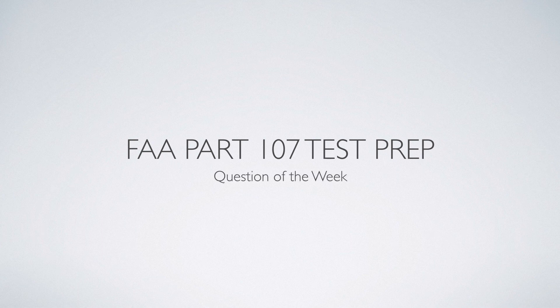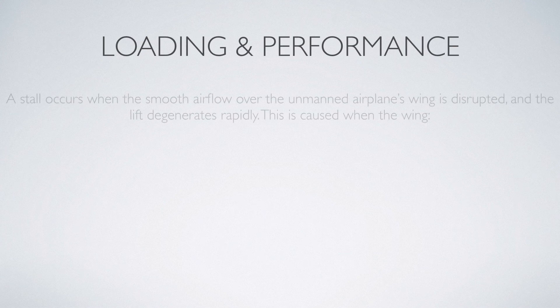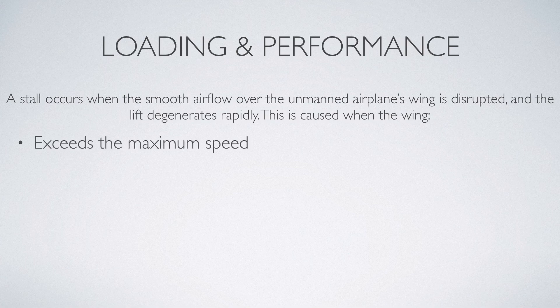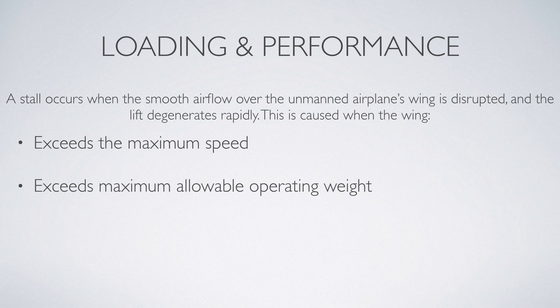We're going to do another weekly test prep question. This week we are dealing with a question that falls under loading and performance. A stall occurs when smooth airflow over the unmanned airplane's wing is disrupted and the lift degenerates rapidly. This is caused when the wing exceeds the maximum speed, exceeds the maximum allowable operating weight, or exceeds its critical angle of attack.